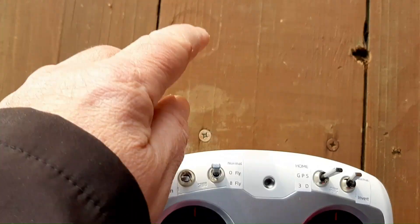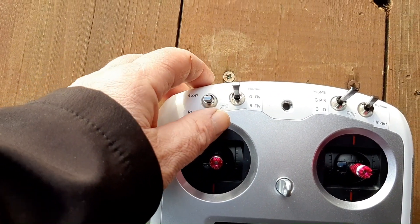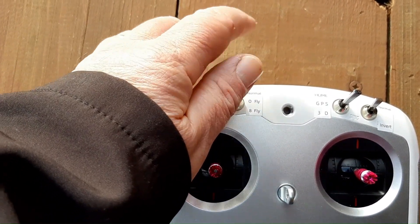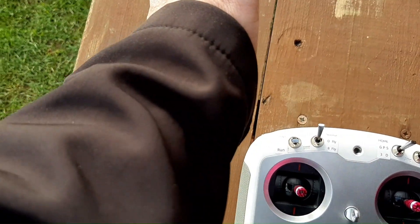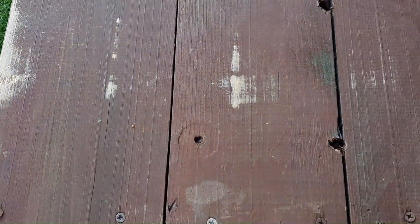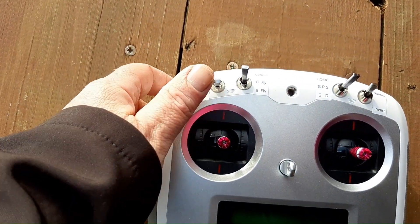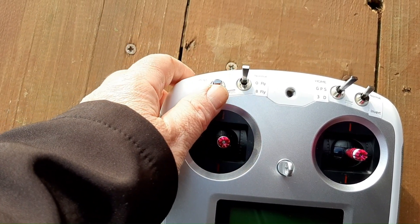The heli was doing circles, nosing in. On the second orbit, what I wanted to do was flick this back to normal and leave the heli pointing into wind. What actually happened was as I came round and the nose came round into wind, I accidentally hit that switch.